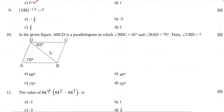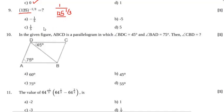Question number 9: What is the value of 125^(-1/3)? The negative exponent means 1/125^(1/3). The cube root of 125 is 5, so the answer is 1/5. The correct option of question number 9 will be C.